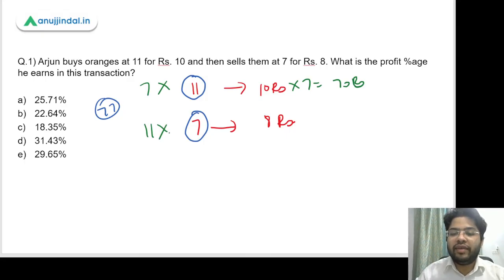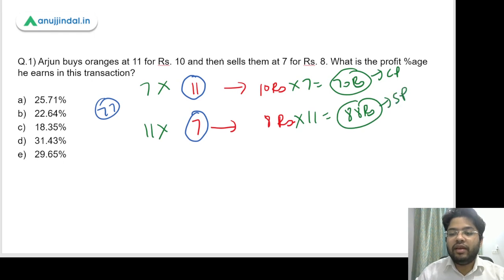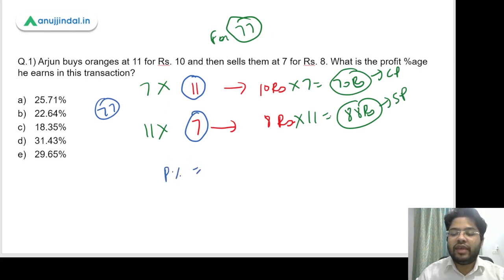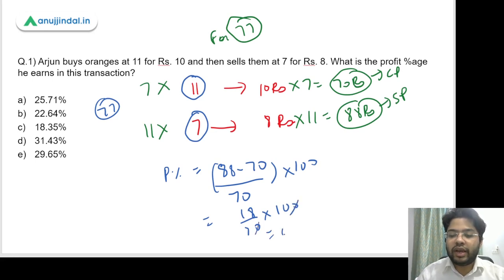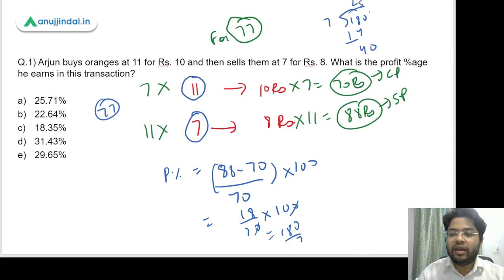Similarly, if 7 oranges are sold at 8 rupees, then 77 oranges would be sold at 8 into 11, which is equal to 88. So 70 becomes the cost price and 88 becomes the selling price for 77 oranges. The profit percentage will remain unchanged as long as we calculate it for the same number. So profit percentage is 88 minus 70 upon 70 into 100, which gives 18 by 70 into 100, equal to 180 by 7. Dividing gives approximately 25.7%, so option A is the answer.